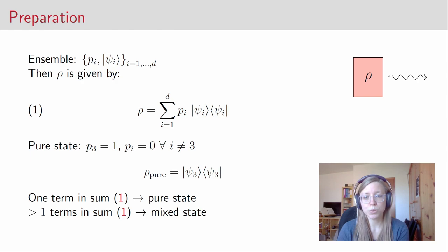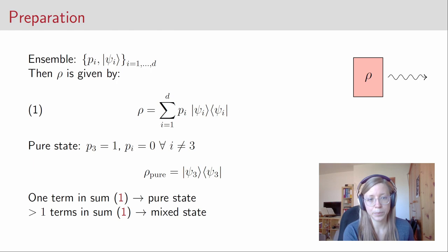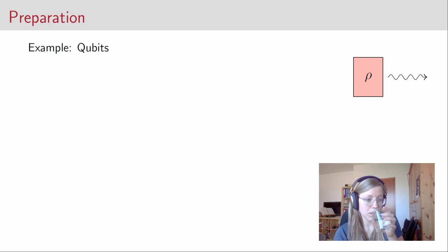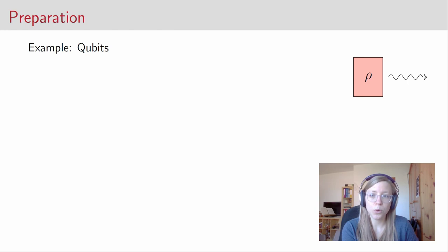A pure state corresponds to the case where only one probability equals one and all others are zero — for example p_3 = 1, giving rho = |psi_3><psi_3|. If the sum in the ensemble has only one term, it is a pure state; if it has more than one term, it is a mixed state. Now let's look at a very important example: qubits, which we use all over quantum key distribution protocols to encode information.